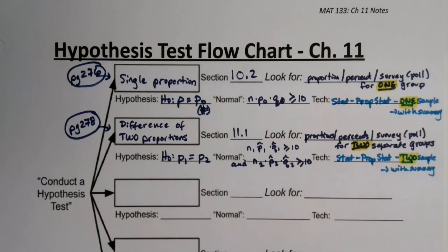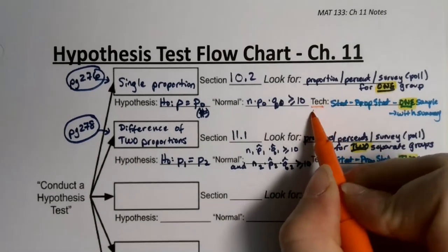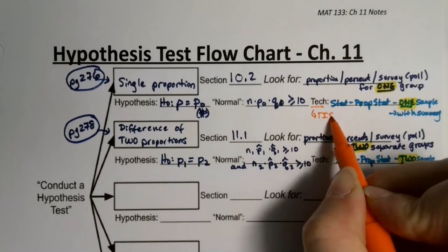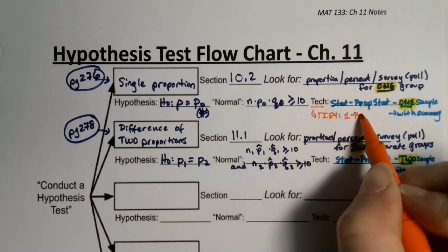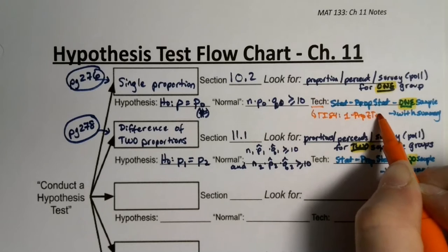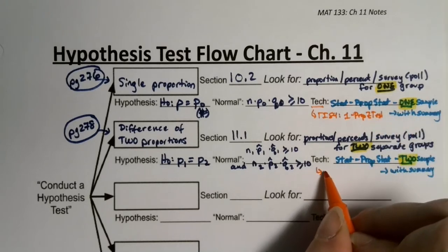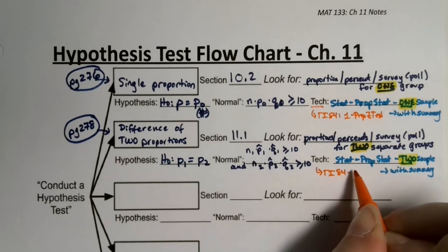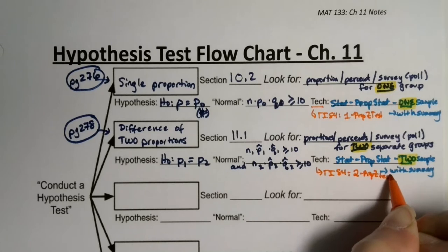If you're on a TI-84, the single proportion test is a One-Prop Z-Test, and the two-proportion test is a Two-Prop Z-Test. Don't bother writing those if you're not using a TI-84.